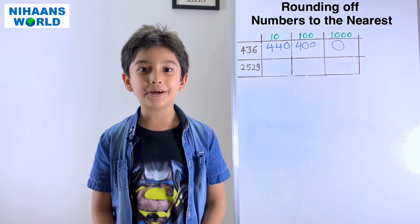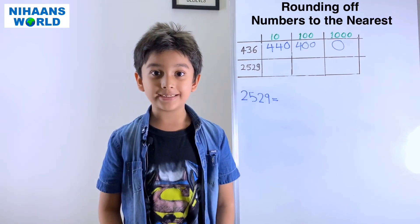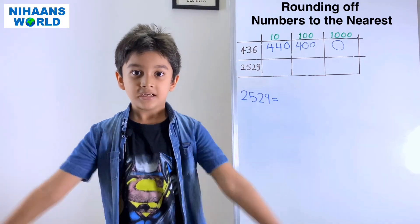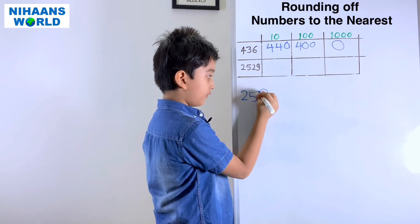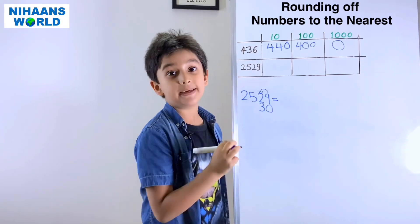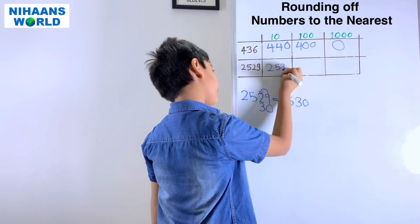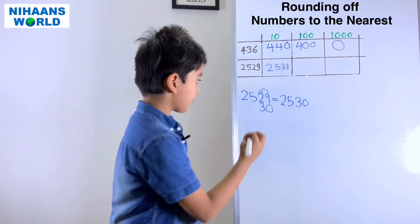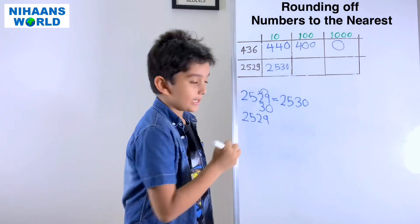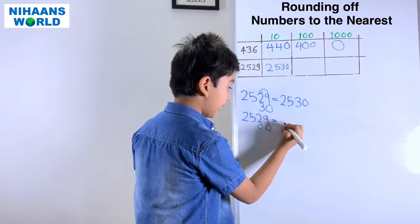Friends, let's do one more example: 2,529. For nearest tens, we check the ones place — 9 is a strong number, so it gives 1 to the tens digit: 2 becomes 3, and 9 becomes 0. So 2,529 rounded to the nearest ten is 2,530. For nearest hundreds, we check the tens place — 2 is a weak number, so 9 becomes 0 and 2 becomes 0, while 2 and 5 stay the same. So 2,529 rounded to the nearest hundred is 2,500.